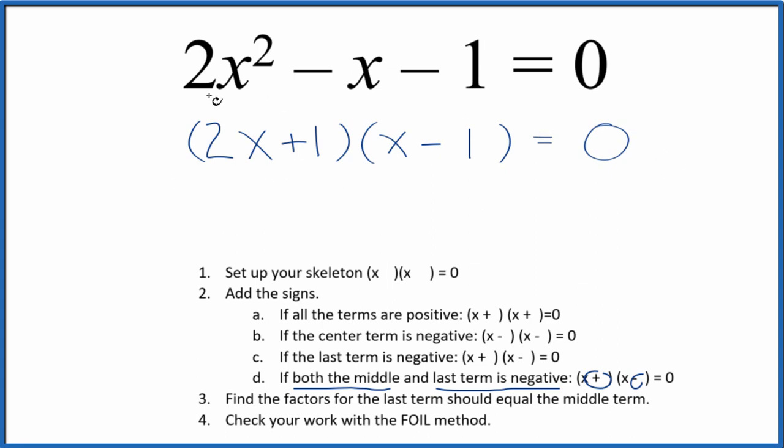So this is the solution for factoring 2x squared minus x minus 1, and we'll check this with the FOIL method here. So let's remove this, give ourselves some room.